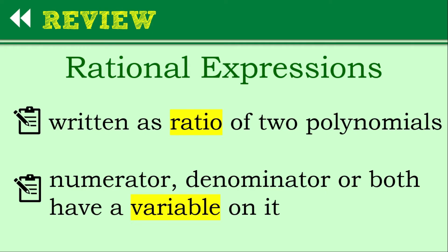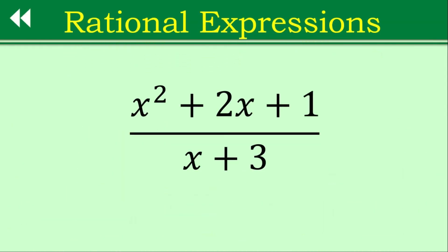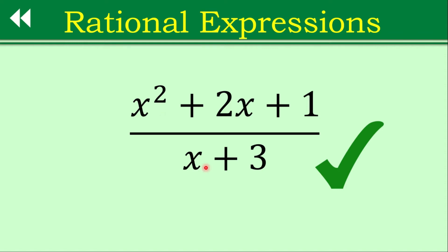Let's identify based on these examples. Example number one: x squared plus 2x plus 1, all over x plus 3. Is this a rational expression? The answer is yes. This is an example of a rational expression. A rational expression is a ratio of two polynomials — the numerator is a polynomial and the denominator as well. There's a variable in both the numerator and denominator, making it a perfect example of a rational expression.